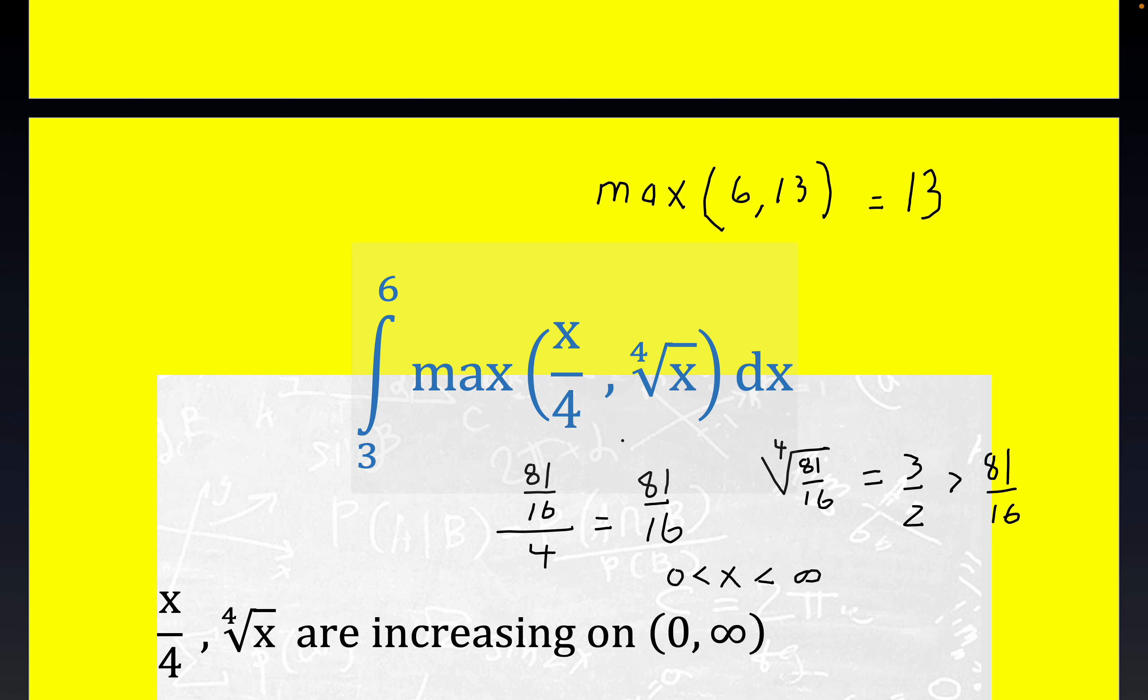We know that between 1 and 2, these numbers are both between 1 and 2. This implies that the fourth root of x is bigger at this number. We're going to use the fact that this number is a bigger function than the linear function. The linear function will eventually outgrow this guy because taking fourth roots makes the number small, but this is bigger than the linear function, at least for this value.